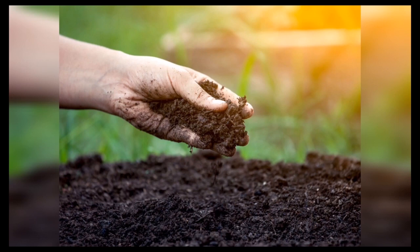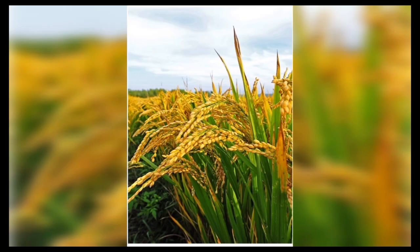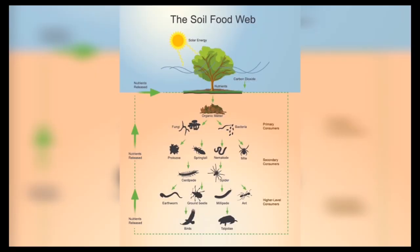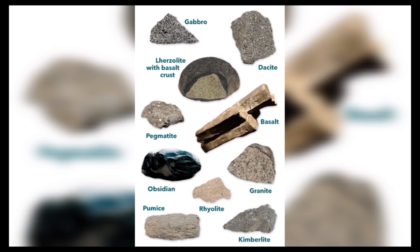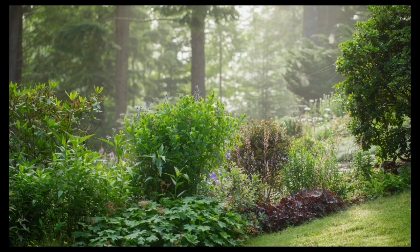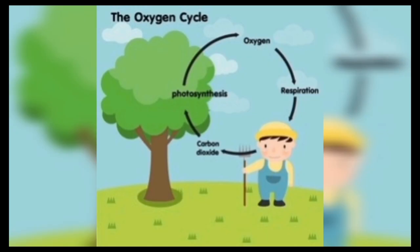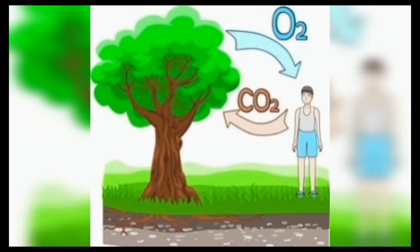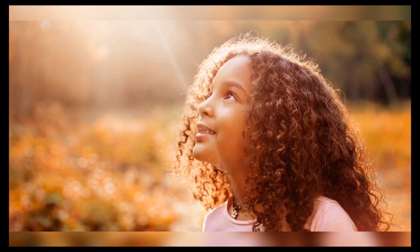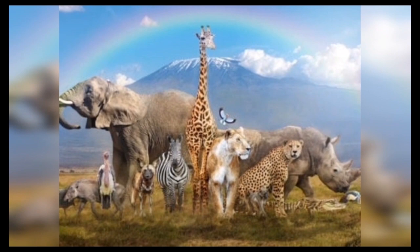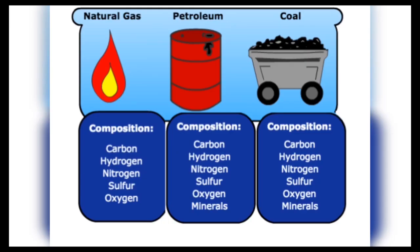Soil is a life support system. It provides food through agriculture and is the source of nutrients for many forms of life. Many valuable minerals are explored from the soil. Plants are really important for the planet and for all living things. Plants absorb carbon dioxide and release oxygen from their leaves, which humans and other animals require. Fossil fuels are of great importance because they burn and produce a significant amount of energy.